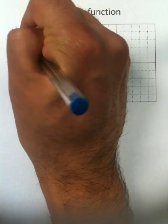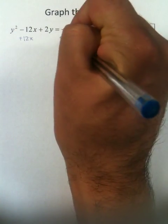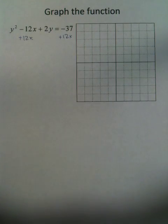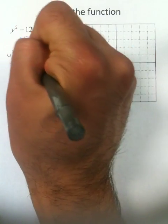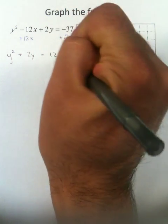So, first thing I'm going to do is add 12X to both sides of the equation. This is going to give me Y squared plus 2Y equal to 12X minus 37.